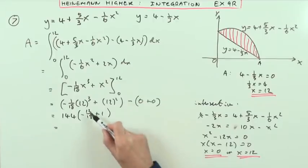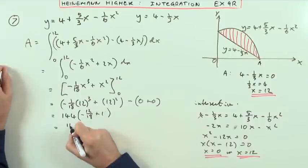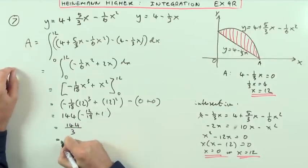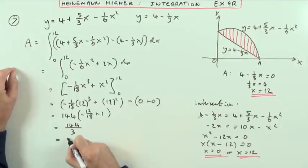Well, negative 12 upon 18 is negative 2 thirds. So negative 2 thirds plus 1 is 1 third. Which means it must be 144 upon 3. And 3 into that goes, that goes 4, 2 over 8. 48.